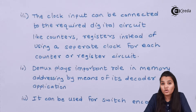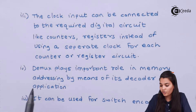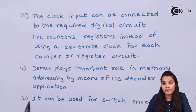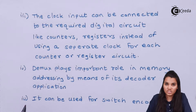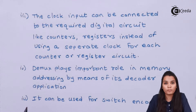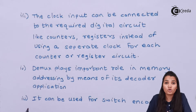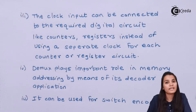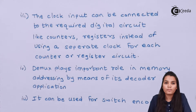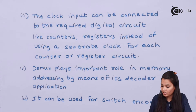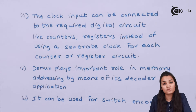The demux also performs a very important role in memory addressing through its decoder application. A decoder performs exactly the opposite operation of the encoder — it can convert a given coded signal into binary form, decoding the signal. Decoder is a very popular application of the demux. The last application is switch encoding.